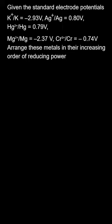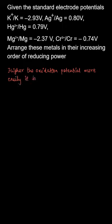We need to arrange these metals in increasing order of reducing power. Higher the oxidation potential, more easily it is oxidized, and hence greater the reducing power. Oxidation potential measures the tendency of a species to donate electrons. Therefore, more the oxidation potential, higher the oxidizing tendency, and more easily it will be oxidized, giving it greater reducing power.